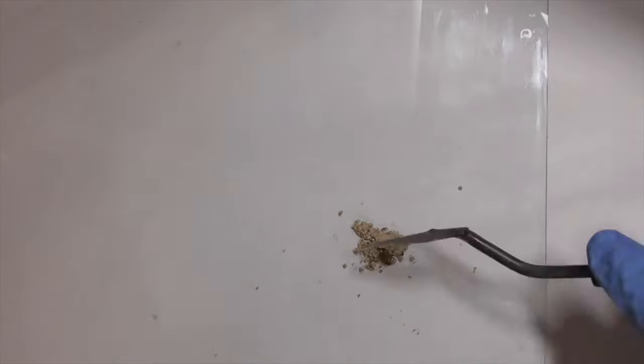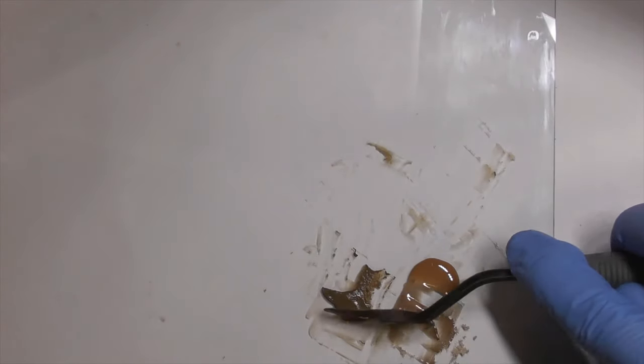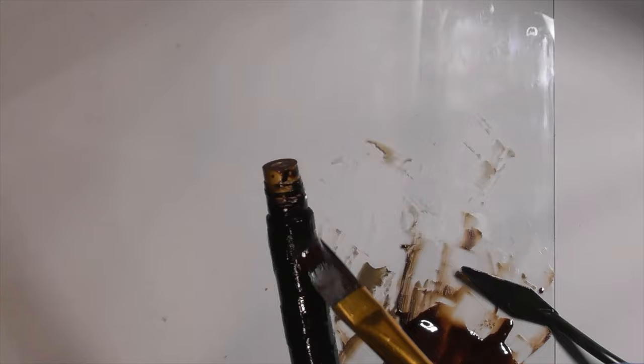Mix diatomaceous earth with water to create a thick paste. Then mix it with equal amount of Kijomi Urushi. Then paint the mixture to the pen. Again, paint a total of 3 layers of the mixture. Let each layer cure for 24 hours before applying the next layer.